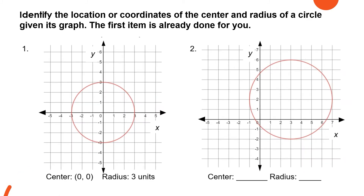So for item number 1, the answer is already shown. We have the center at (0,0), or at the origin, and the radius is 3 units. We make sure that the center is equidistant from any points. We can examine the points from the center to a point on its right side — counting 1, 2, and 3 — so that is 3 units.